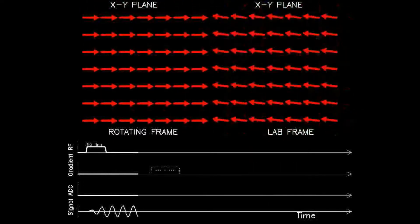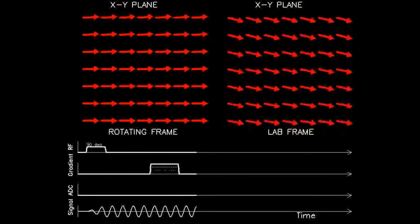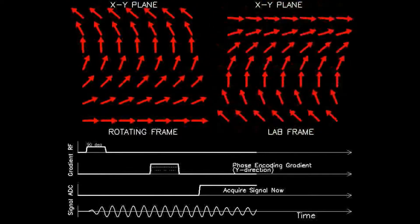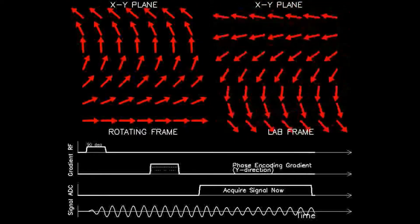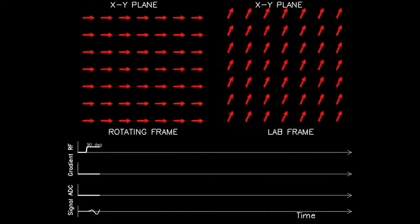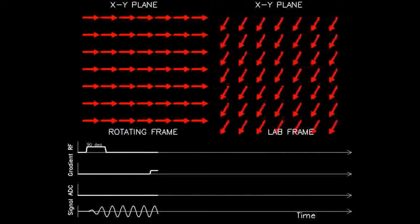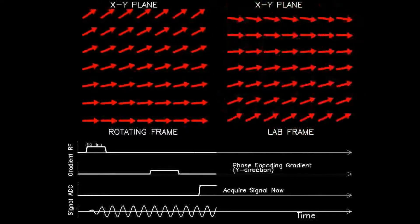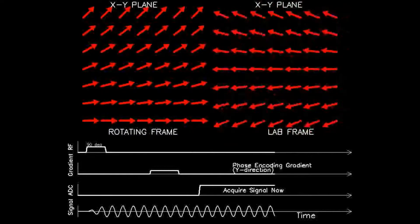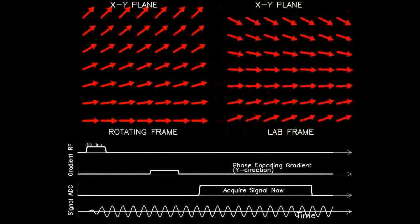The bottom panel shows a similar set of timelines. The top shows the RF power causing the initial 90-degree spin flip, the second shows the application of an externally impressed gradient along the y-axis, the third shows the data acquisition window, and the bottom shows the detected total signal.